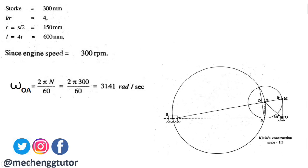As you can see in the diagram, these lengths are large and difficult to draw on paper, so we apply a scale of 1:5 — the lengths are reduced by a factor of 5. To know the procedure for drawing Klein's construction, you can refer to the video which will appear in the top right corner as a YouTube card.